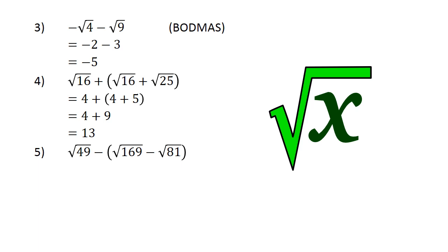Square root of 49 minus in brackets square root of 169 minus square root of 81, close brackets, is equal to 7 minus in brackets 30 minus 9, close brackets, is equal to 7 minus 4, is equal to 3.